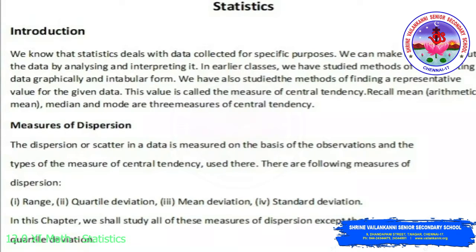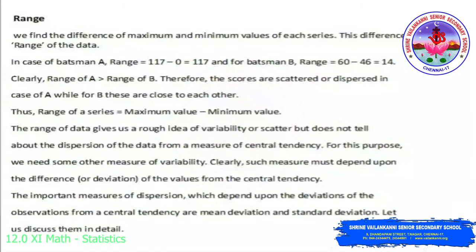In this chapter we shall study all of these measures of dispersion except the quartile deviation. Range: we find the difference of maximum and minimum value of each series. This difference is called the range of the data. So range of a series is maximum value minus minimum value. The range gives us a rough idea of variability but does not tell about the dispersion from a measure of central tendency. For this purpose we need some other measure of variability. Such a measure must depend upon the difference or deviation of the values from the central tendency. The important measures of dispersion which depend upon the deviations from a central tendency are mean deviation and standard deviation.